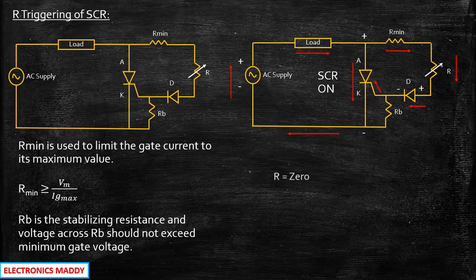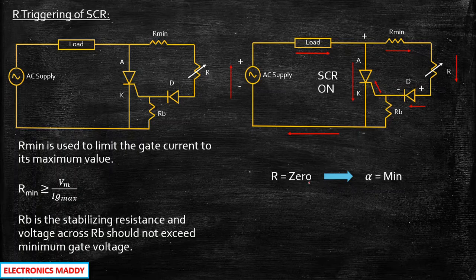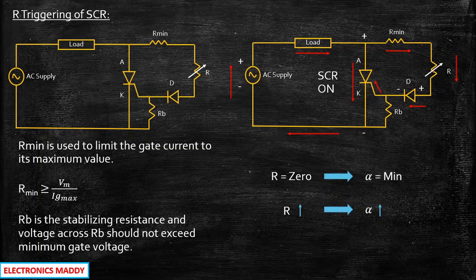R basically controls the firing angle of the gate terminal of the SCR. For example, if R is equal to 0, the firing angle will be minimum — alpha is equal to 0. As you slowly increase the value of R, the value of alpha also starts increasing. So with the help of R, you are able to control the firing angle of the SCR. That is why it is called R triggering — basically with the help of a resistor, we are able to control the firing of the SCR.